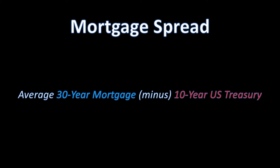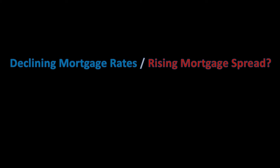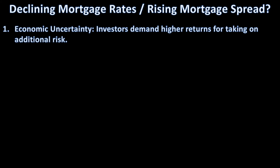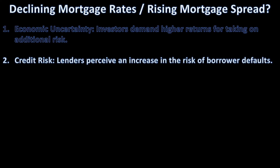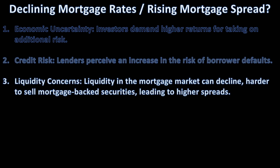This premium — the difference between the two — will fluctuate based on economic conditions. Right now we have a phenomenon: declining mortgage rates all over the headlines, yet rising mortgage spreads. How is this possible? A couple of reasons: economic uncertainty, where investors are demanding higher returns and higher premiums for taking on additional risk. Remember, when we take out a mortgage to buy a house, there's somebody on the other side buying that mortgage as an investment. There's also credit risk — lenders may perceive an increase in the risk of borrowers defaulting, so they charge a little bit extra.